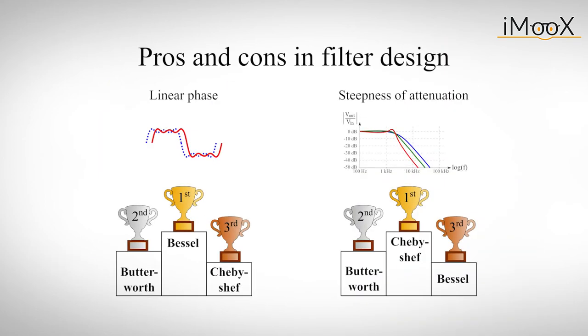If linearity is an issue, a Bessel or maybe Butterworth filter is needed. If steepness is the major argument, Chebyshev will save the day. One might also think about component tolerances or even temperature variation, which can have quite an effect on the real world circuit.